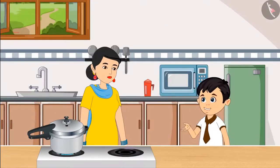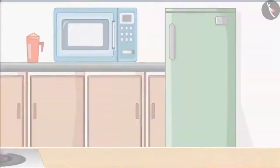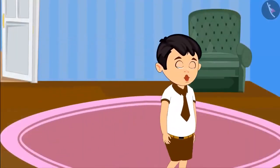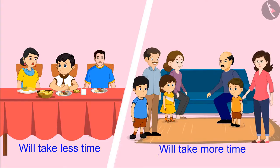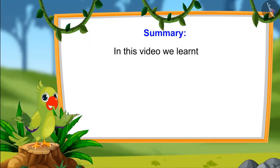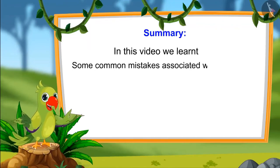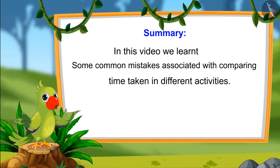Chotu says, okay Mom, I got it. I will have some biscuits first and then we will go to play with Tito for some time. But call me as soon as the food is ready, Mom, okay? Children, did you see that you will take less time to cook for three people and more time will be required to cook for more people? In this video, we learned about some common mistakes which should not be done in comparing the time taken in different activities. I hope that you have understood this topic completely and properly. Bye-bye friends!